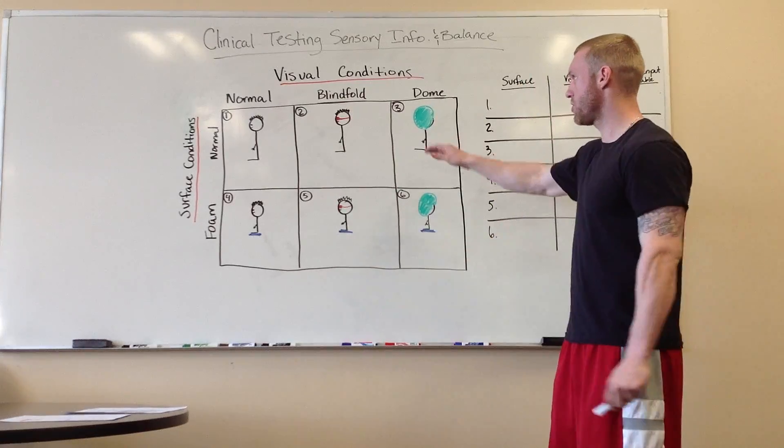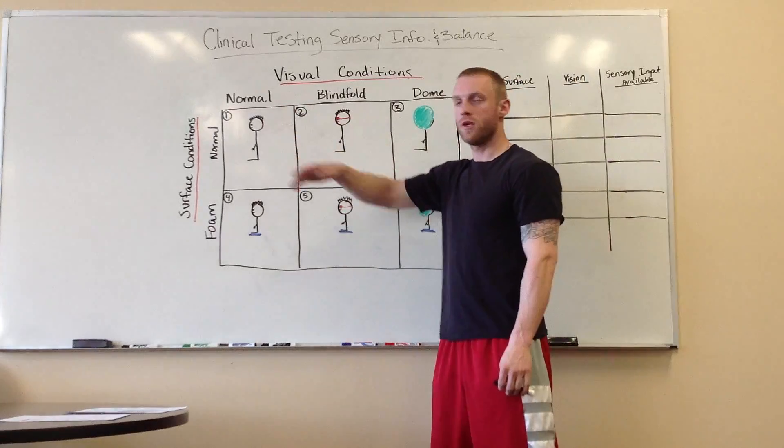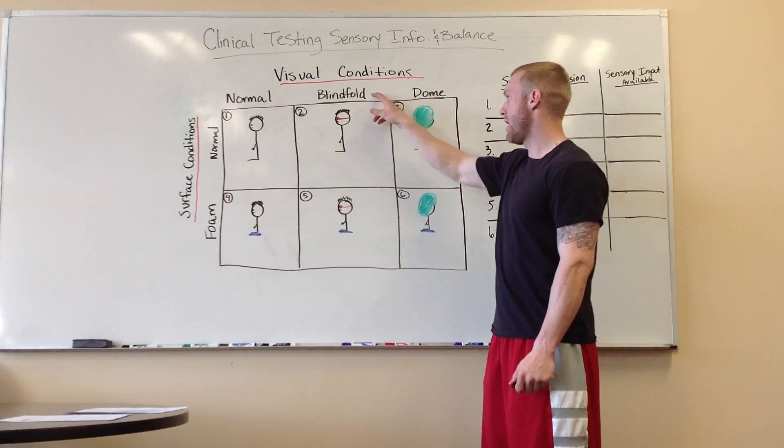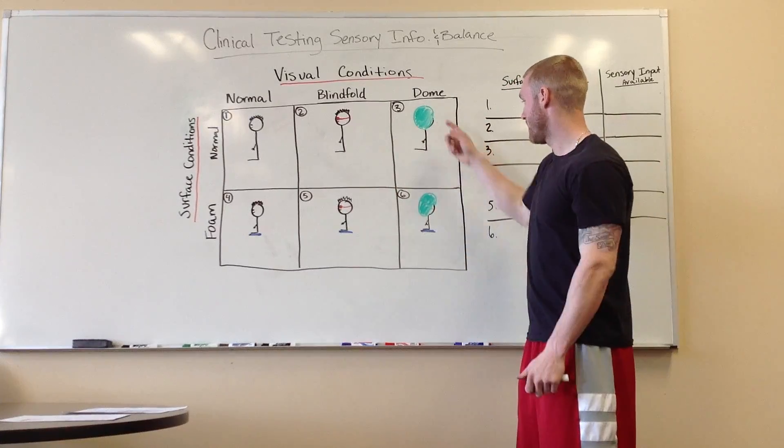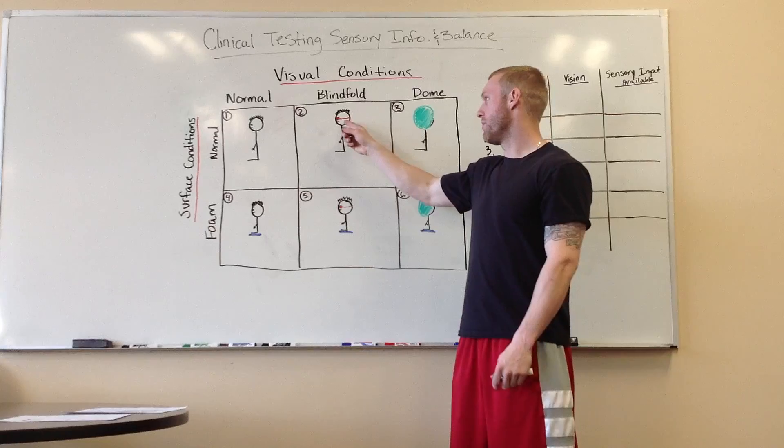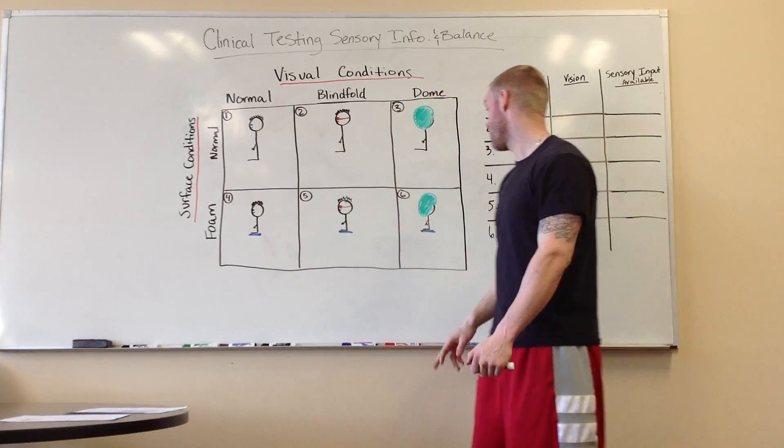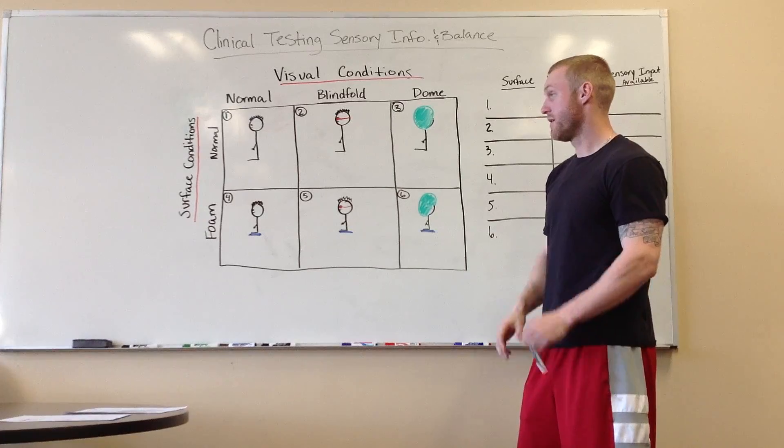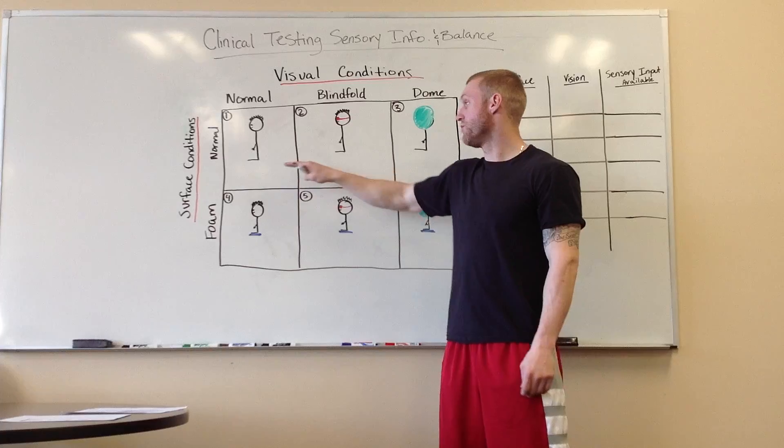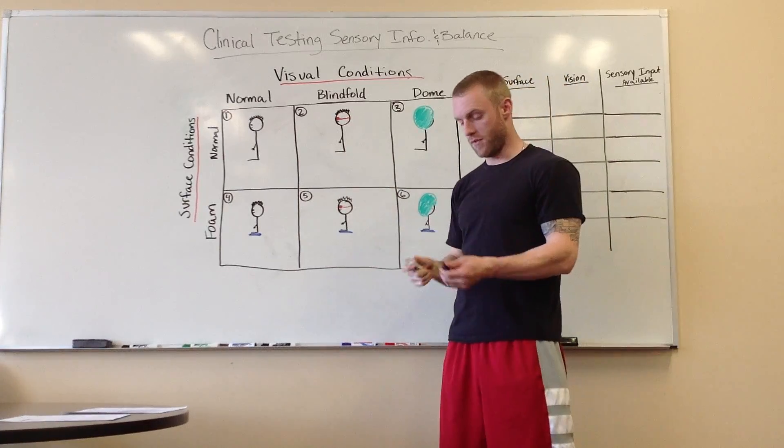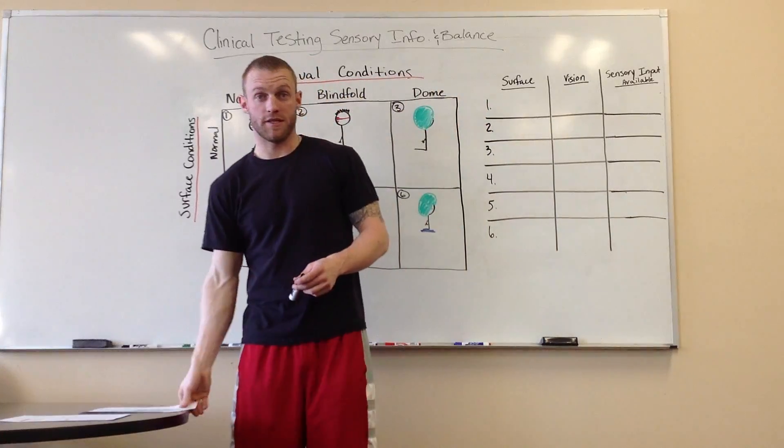This is just the chart showing you your visual conditions. So you have normal, which would be your eyes open, blindfold, eyes closed, and then you'd have a dome over your head. So the green thing is the dome, the red is the blindfold, and these blue markings are your foam pad. So the first three steps deal with normal ground surface. So if you want to call it like an accurate somatosensory.